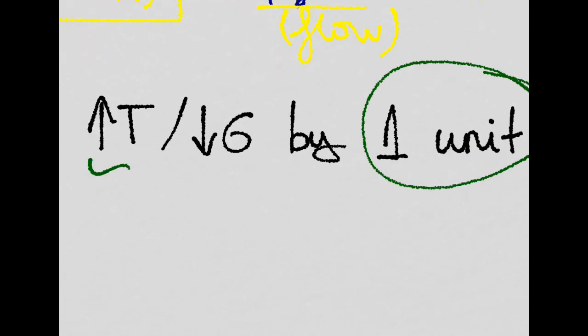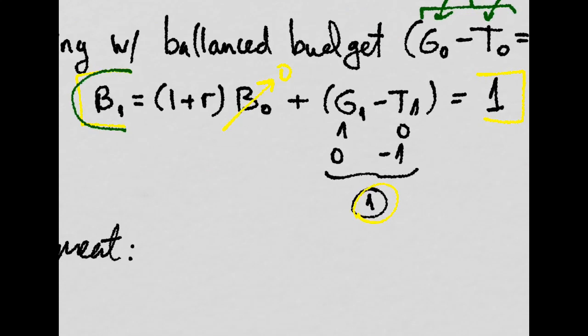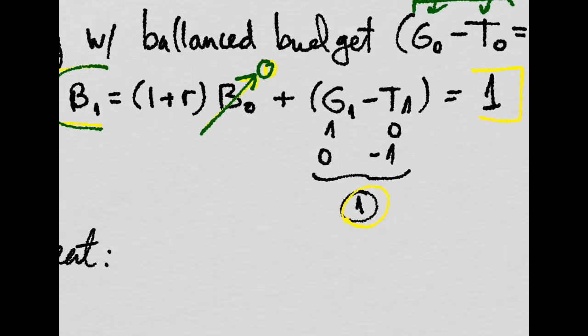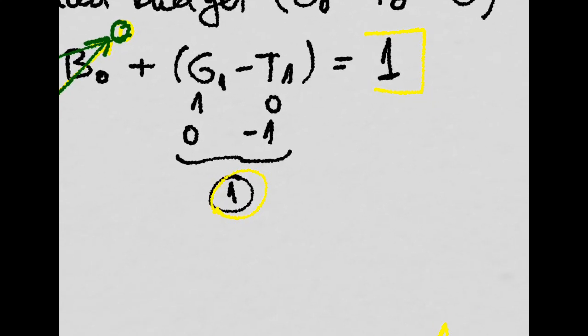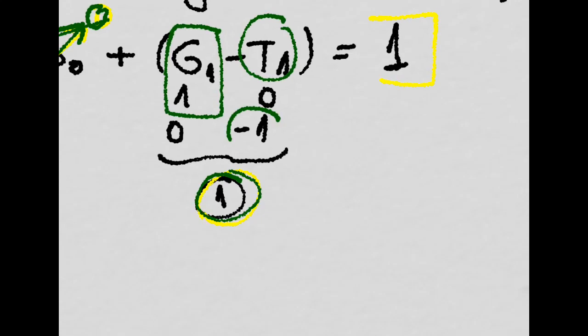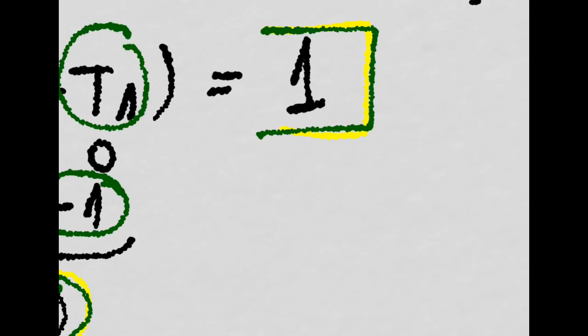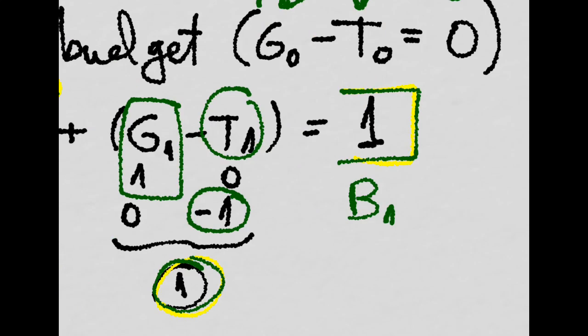That is, we increase taxes or we decrease government expenditure by one or a combination of both. So we want to know the level of debt that will remain at year one. We have to know that the outstanding debt was zero, and then this is all zero. And we know that we are running at a deficit of one because we either increase government expenditure by one or decrease taxes by one also. And we have that the outstanding debt at year one will be just equal to one. That is, the increase in the primary deficit.